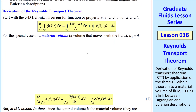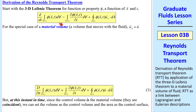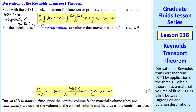We start with the 3D Leibniz Theorem, which we discussed in the previous lesson. In general, this volume V moves independently of the fluid. But let's discuss a special case known as a material volume. So uA is equal to u, where u is the fluid velocity, and uA is the velocity of any point along the surface area A of t.